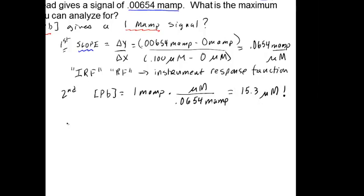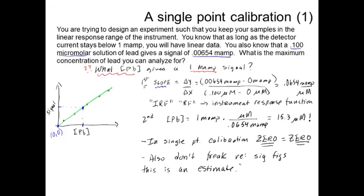And so, the important things to remember about this problem are a couple of things. Remember, in a single-point calibration, zero is really equal to zero. And that's important to remember. And don't freak out about sig figs because this is, after all, an estimate.